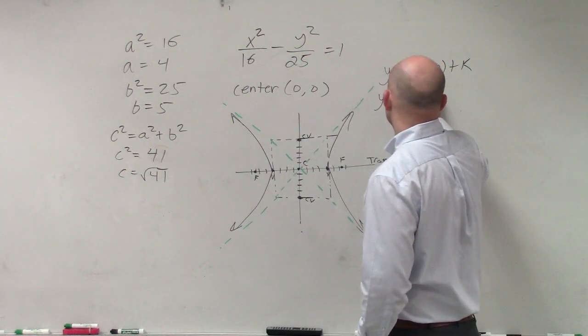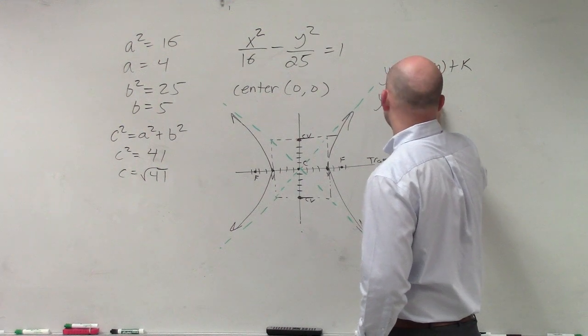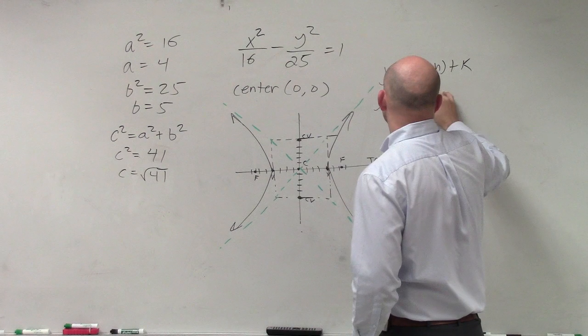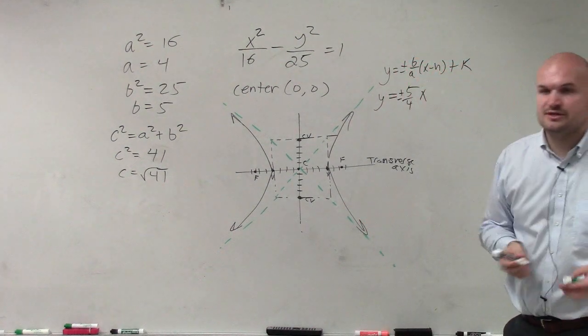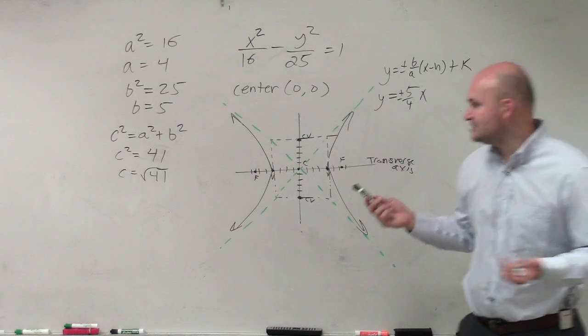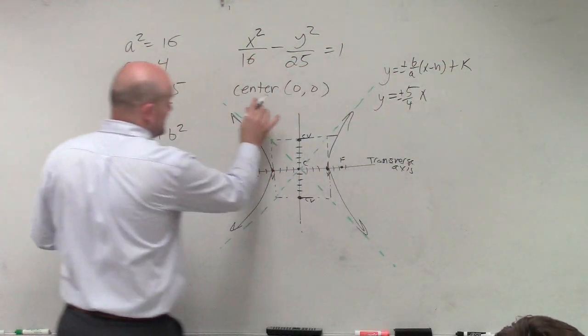So y equals plus or minus b, which is 5, over a, which is 4 times x minus 0. So that's just going to be x. And k is 0. And h is 0. So we're good. That's all we need to do. Oh, we need to identify these points, right? Sorry about that. So we've got center 0, 0.